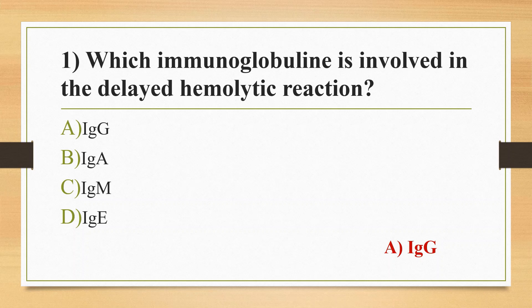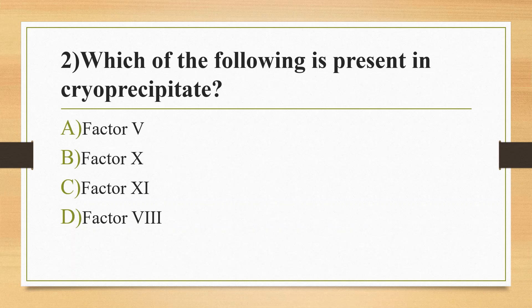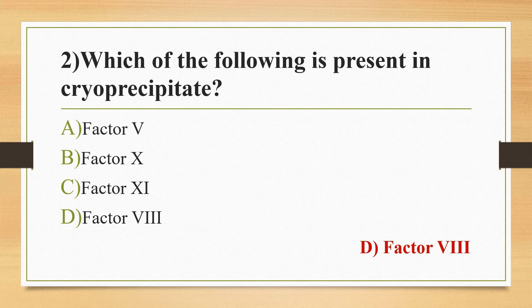Second question: which of the following is present in cryoprecipitate? Option A: factor 5. Option B: factor 10. Option C: factor 11. Option D: factor 8. The answer is option D, factor 8. Cryoprecipitate is prepared by thawing fresh frozen plasma at 1 to 6 degrees Celsius and collecting the precipitate. It contains a high concentration of factor 8, fibrinogen, factor 13, and von Willebrand factor.